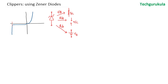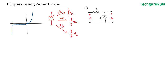Taking this into consideration, let's see some clippers using zener diodes. For the first circuit, as we are concentrating on shunt clippers, we take a shunt clipper with zener diode D1 and a current limiting resistor R. Let's analyze the cases.